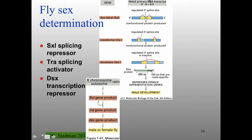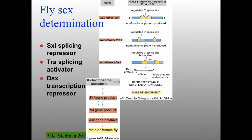The X-to-autosome ratio question: in a male you have XY so one X relative to the autosomes — two copies of each — giving a ratio of 0.5. In a female you have two X's and two autosomes, giving a ratio of 1.0. We can talk more about the details of what happens at different X-to-autosome ratios offline or in office hours.